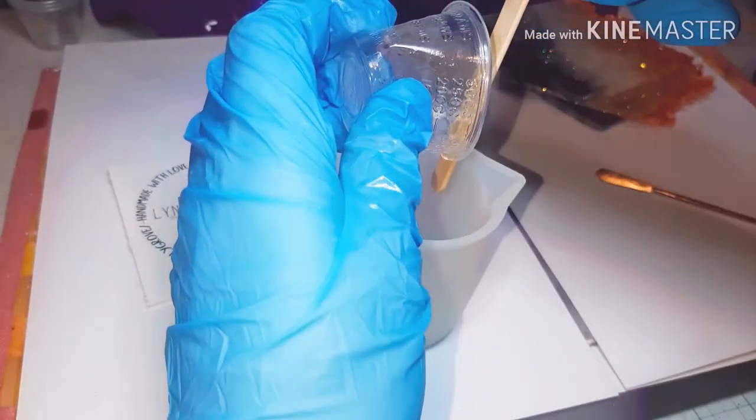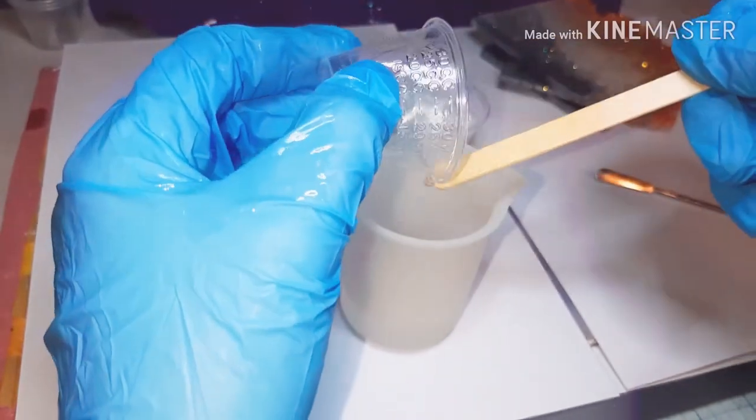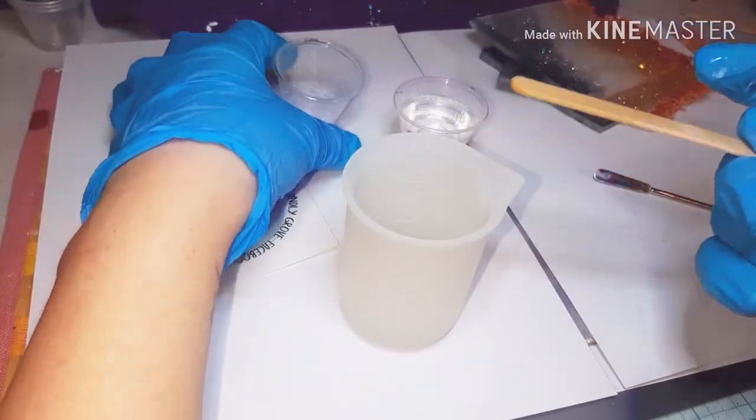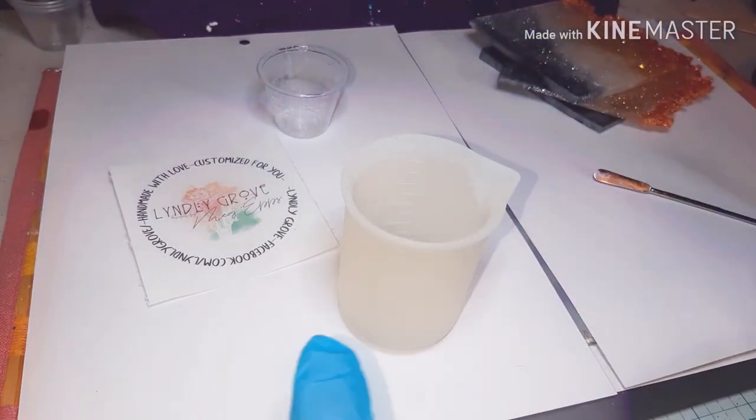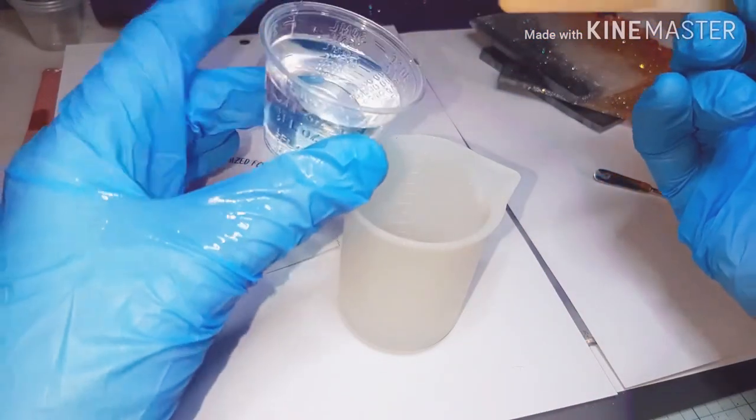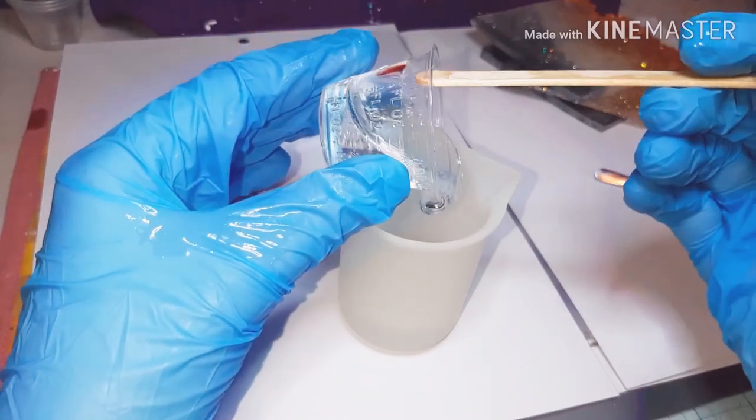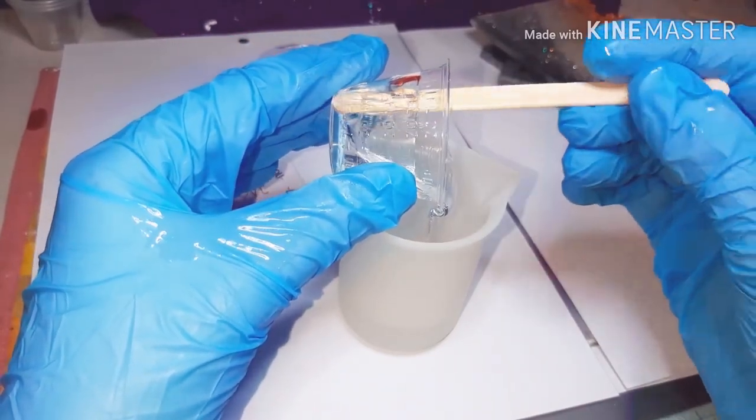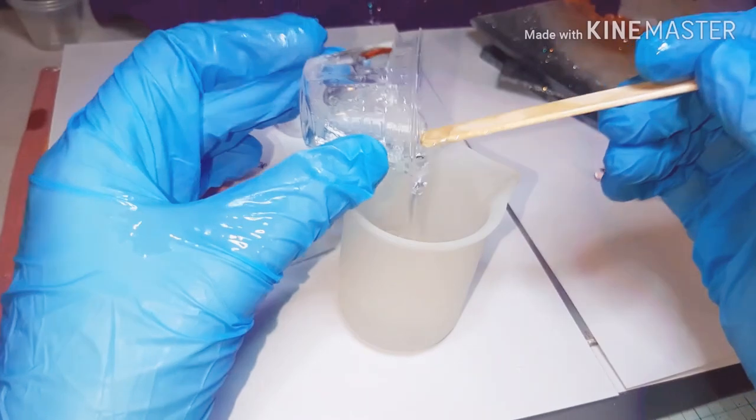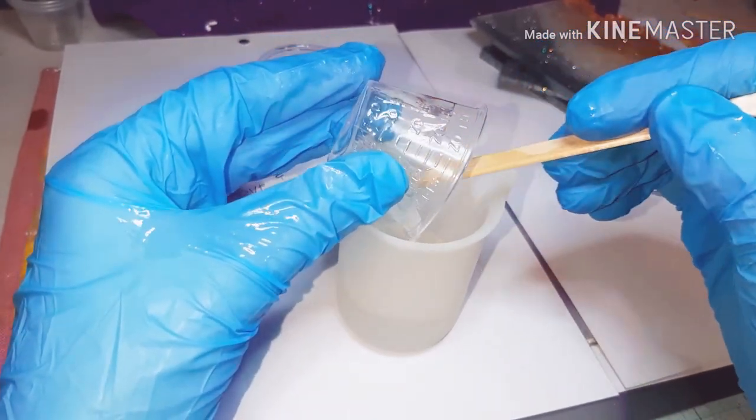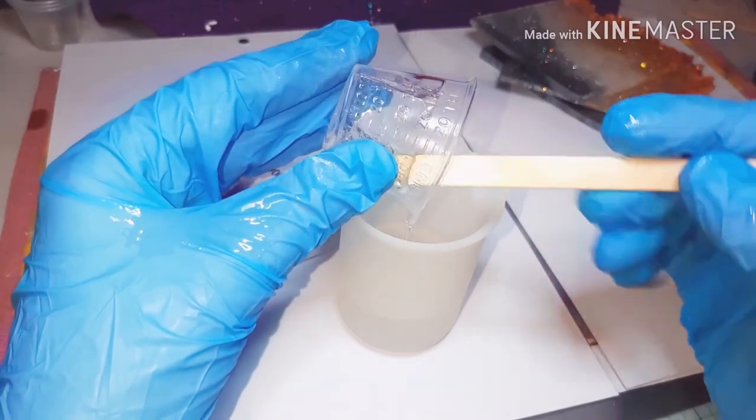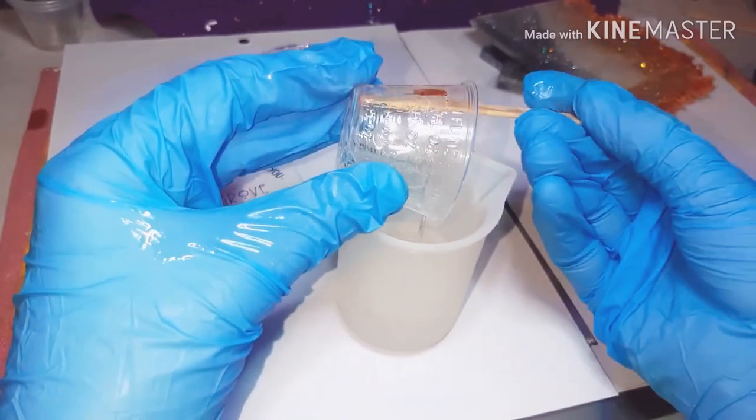And I'm probably a little OCD when it comes to scraping out my cup. So I feel like I got all of part B out. So now I'm going to move on to my part A. And like I said, part A is a little thicker. Now you might be wondering how I can tell the difference because they're both clear. Every bottle, any supplier that you order from should have their bottles labeled part A and part B.